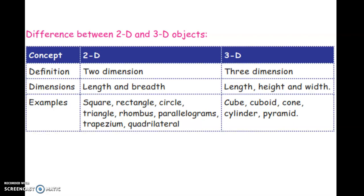Difference between 2D and 3D shape. Definition: 2D means 2 dimension, 3D means 3 dimension. Dimensions: 2D means length and breadth, 3D has length, height and width.